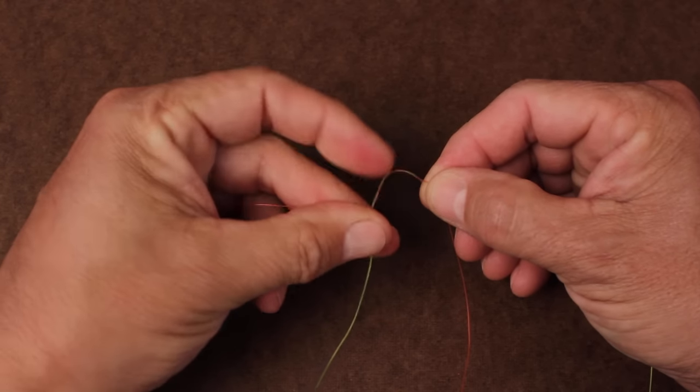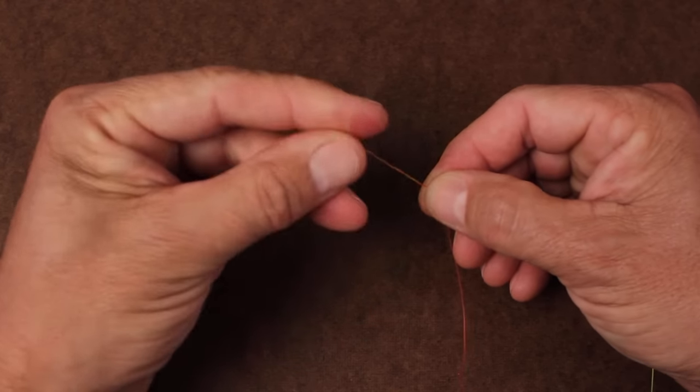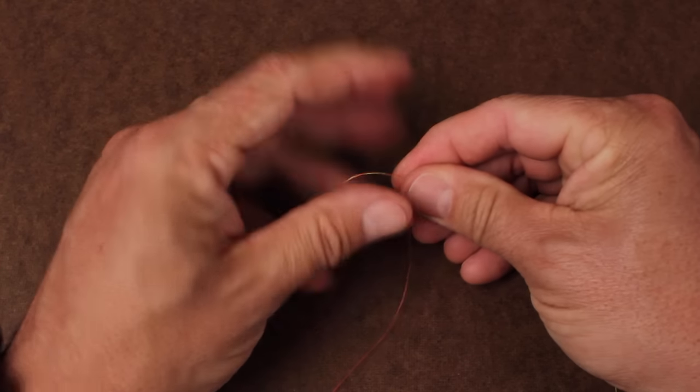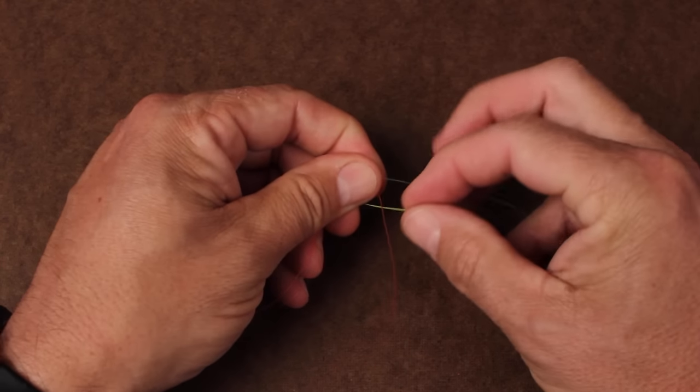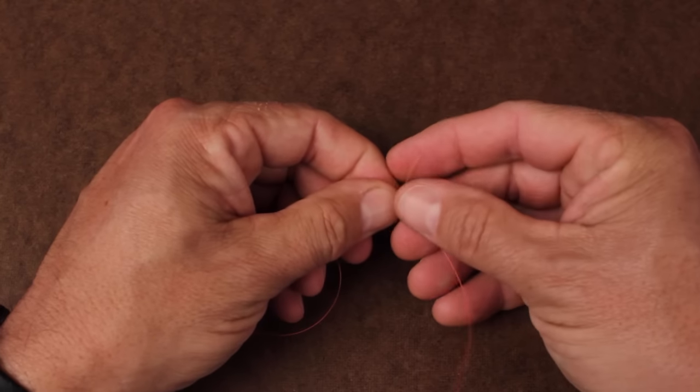I'll take 5 wraps, which is pretty standard for most blood knots. Pass the tag between the two lines that form the intersection, and then pinch that intersection to keep it open.